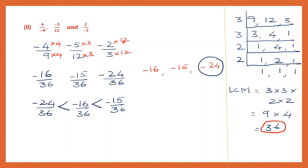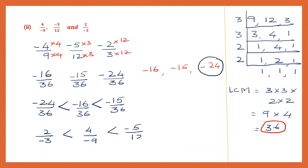These are all negative numbers. As you keep moving to the left on the number line it gets smaller. Minus 24 is the extreme left, so that is the smallest — minus 24 by 36. Then minus 16 is to the left of minus 15, so minus 16 by 36 comes next, followed by minus 15 by 36. Going back to the original question: 2 by minus 3 is smaller than 4 by minus 9, which is smaller than minus 5 by 12. That is our final answer.